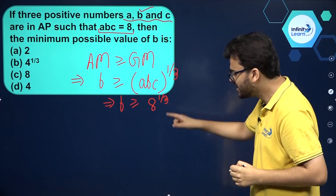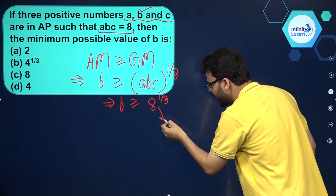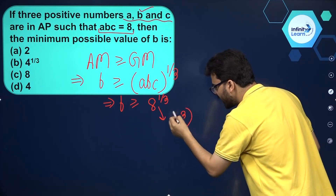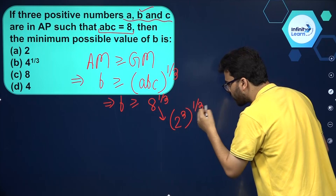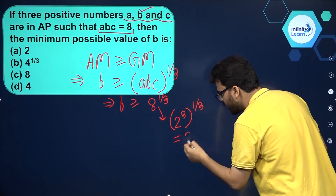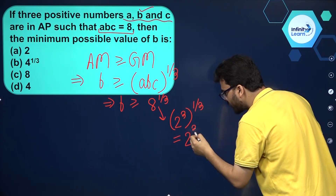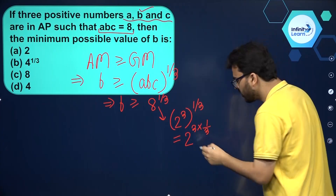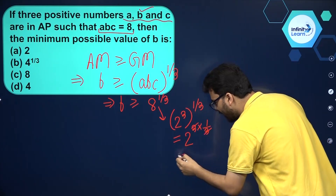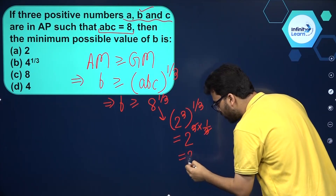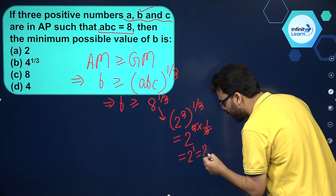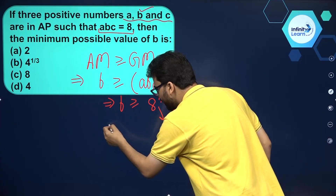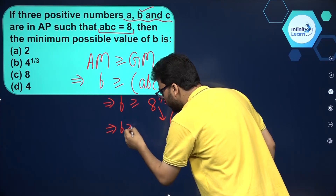We can simplify 8 raised to the power 1 by 3. 8 can be written as 2 raised to the power 3, whole raised to the power 1 by 3. Using laws of exponents, the powers multiply: 3 into 1 by 3 cancels out, giving us 2. So B is greater than or equal to 2.